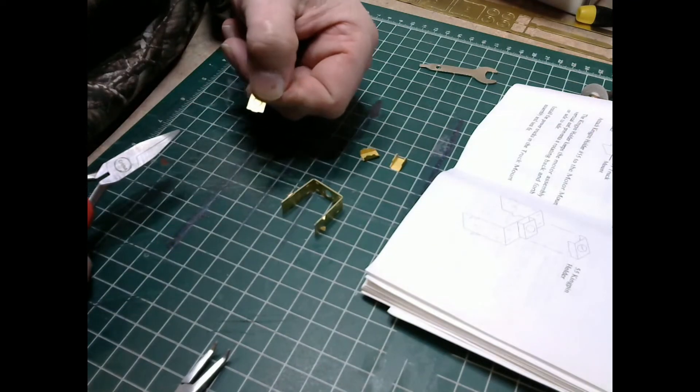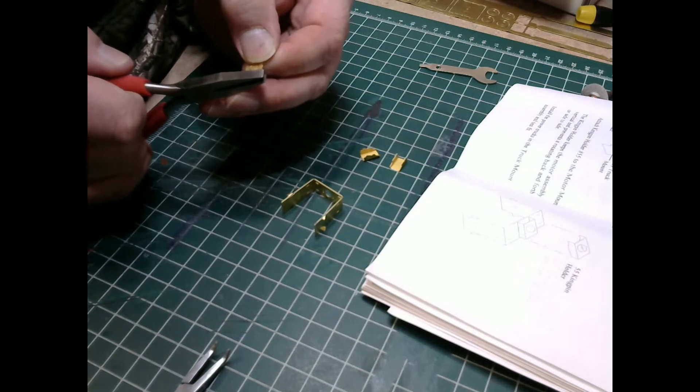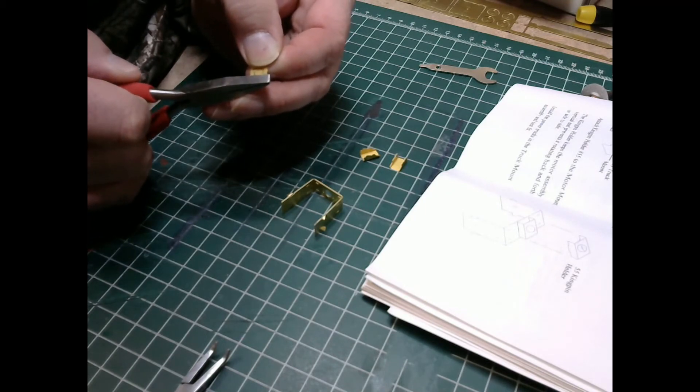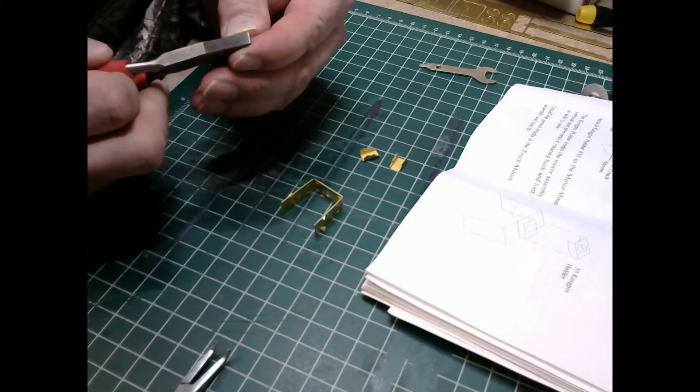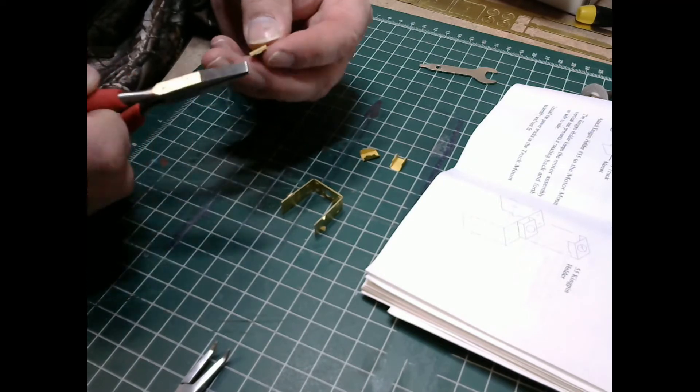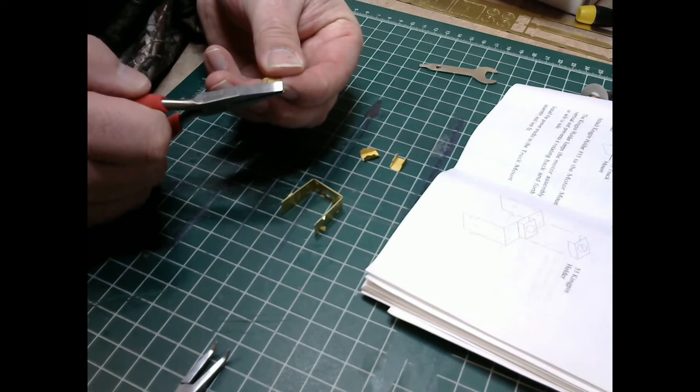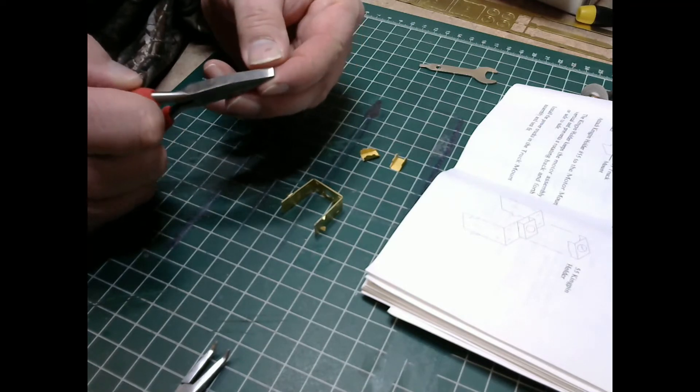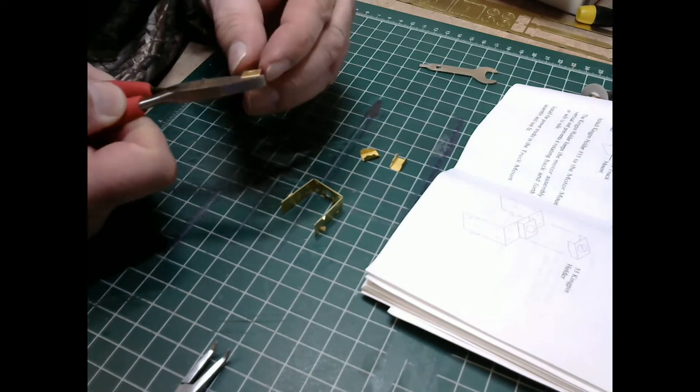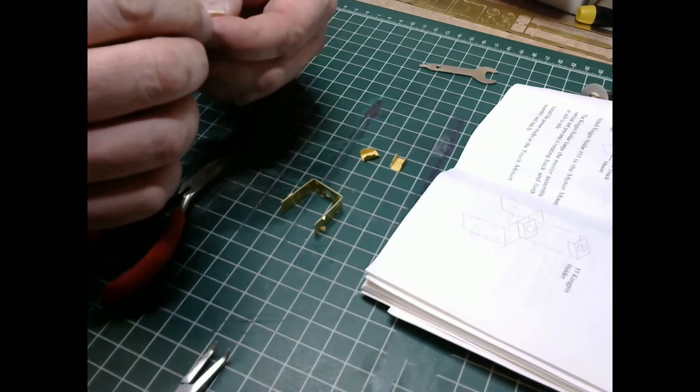Now I'm going to take and do the same thing to the kingpin holder, which is the very top piece, and this is just a small bend—I mean tiny, like a sixteenth of an inch bend. So I'm going to take and do that, and boom, that's all done.